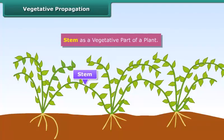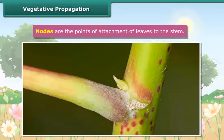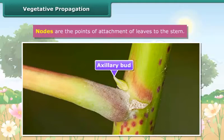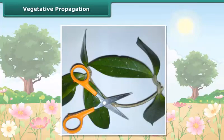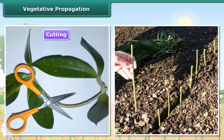Stem as a vegetative part of a plant. Have you ever seen buds at the nodes of the stem? These buds are called axillary buds. These buds do not produce flowers; rather they give rise to new branches. In some plants like rose, small portions of the stem containing small nodes are cut from the plant. These cut portions are called cuttings. These cuttings, if planted and watered, can produce new rose plants.